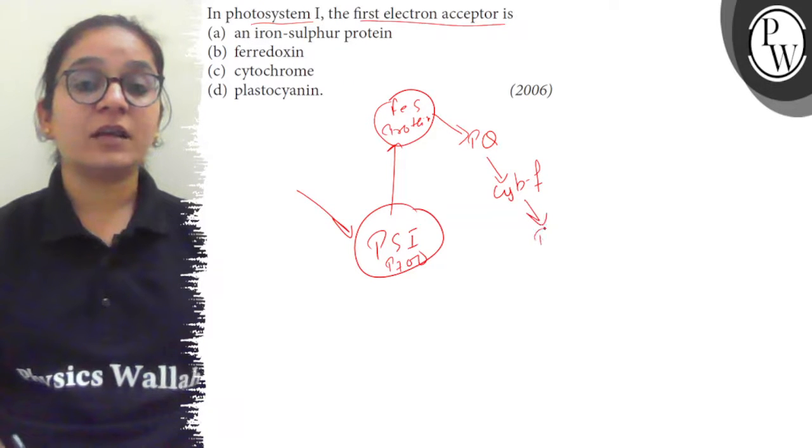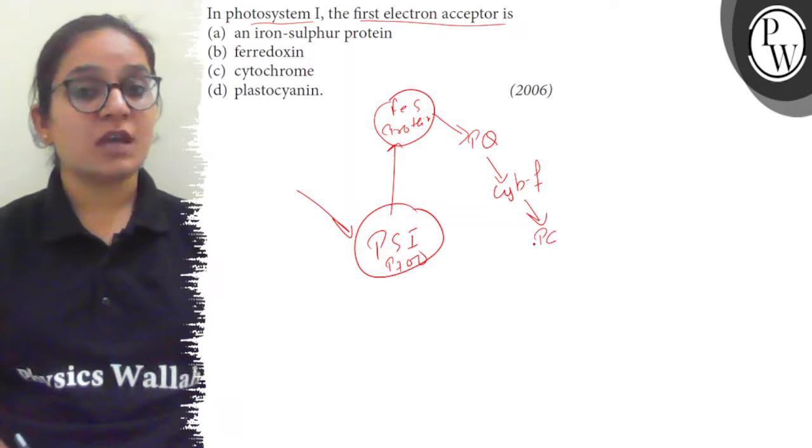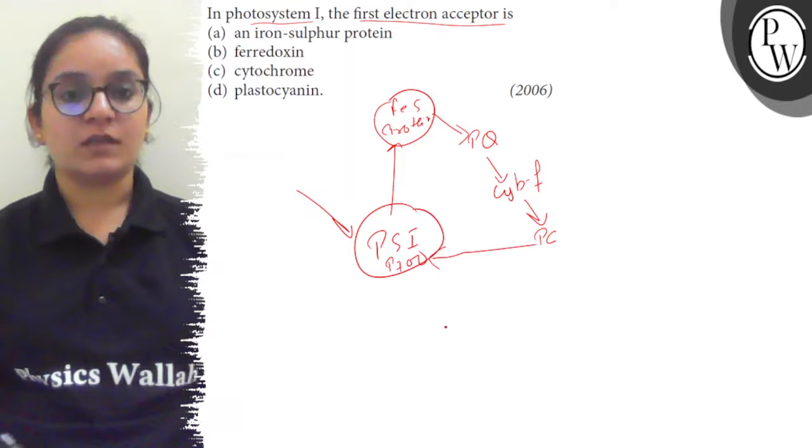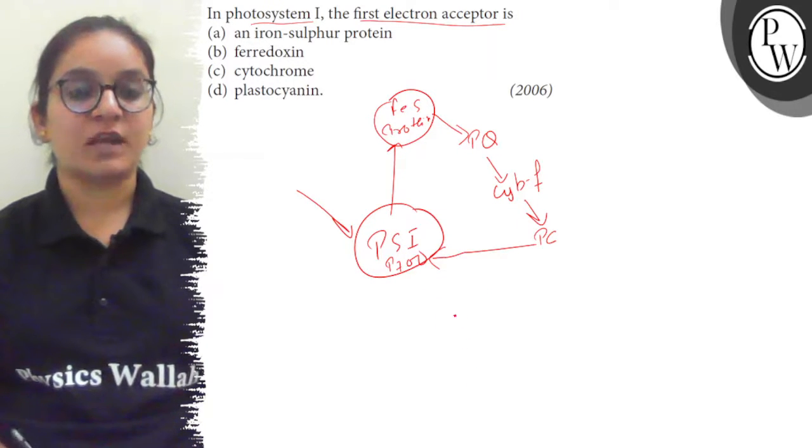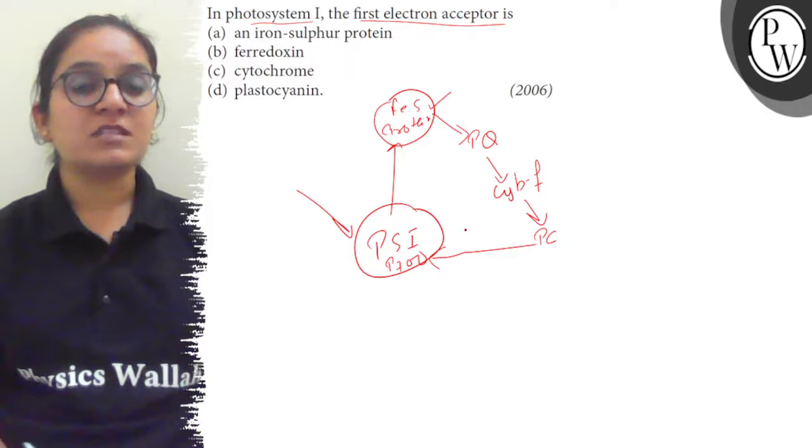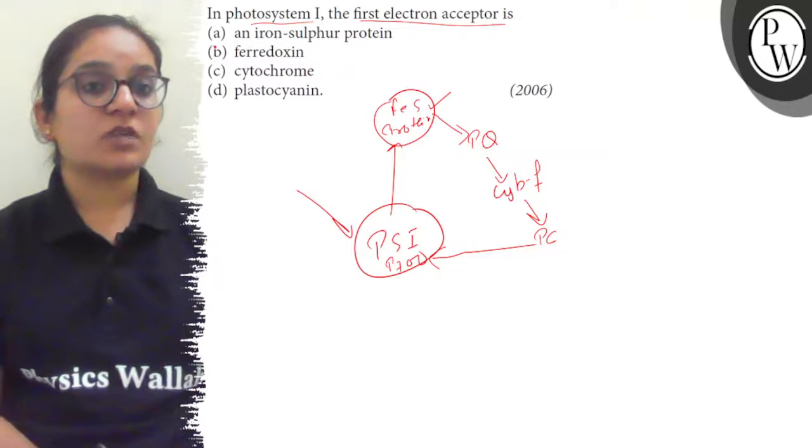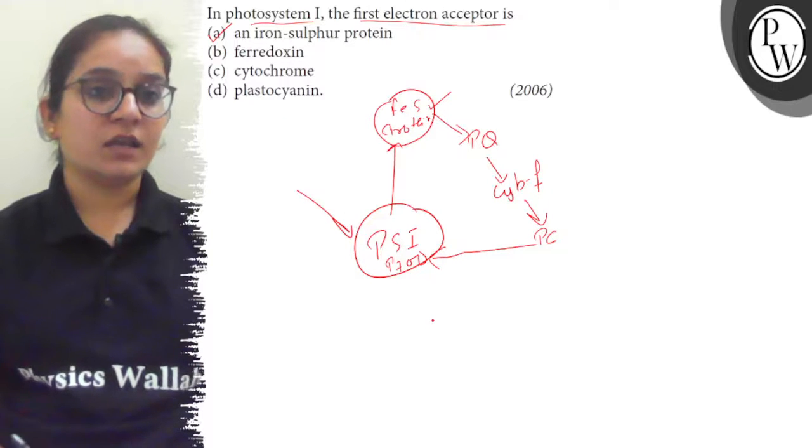is also released. Then the electron is passed through plastocyanin and comes back to photosystem I. This is cyclic photophosphorylation, and the first electron acceptor is iron-sulfur protein. So the correct answer here is option (a). Thank you.